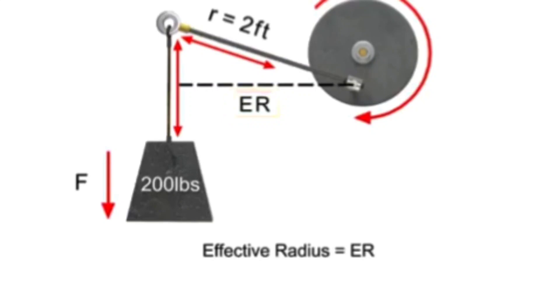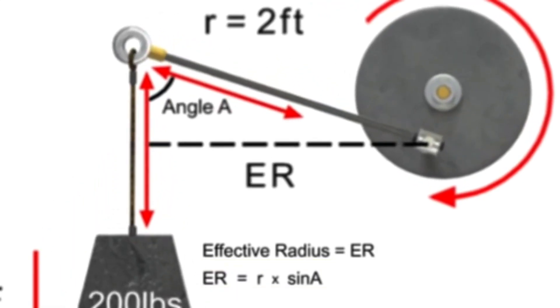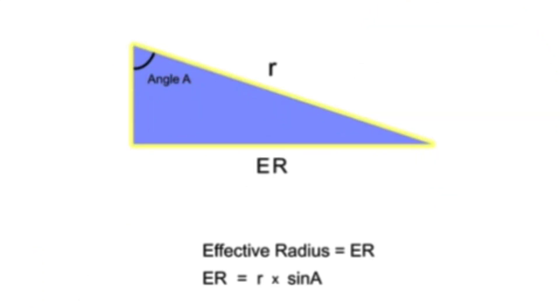To calculate the effective radius, multiply the length of the lever arm times the sine of angle A. Sine is a trigonometric function for a right triangle that relates the ratio of the side opposite of a given angle to its hypotenuse.